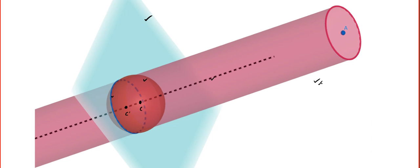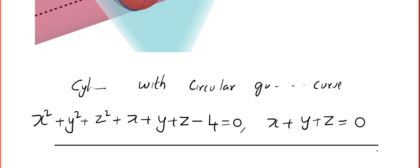I hope this video is useful for you. I will be back with more videos and in the next video we will be discussing about the cone. Before I leave, I will give you a homework: find the equation of a cylinder with a circular guiding curve given by the circle. Comment below whether you are able to do this question. Practice, practice, and practice a lot — then only you will be able to score marks.